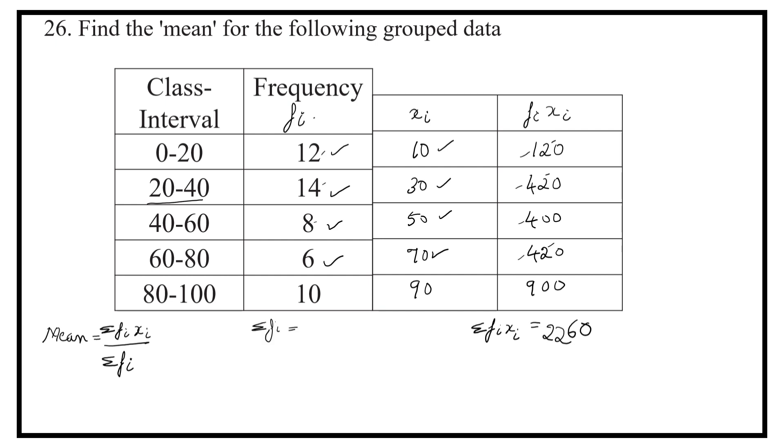Now it is time to find sigma fi, 12 plus 14 plus 8 plus 6 plus 10, that is 50.